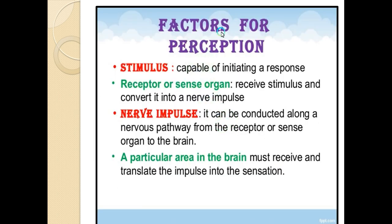For perception to occur, four factors are required. First is a stimulus — something capable of initiating a response. Second is a receptor or sense organ, which must receive the stimulus and convert it into nerve impulses. We have different sense organs like the eye, ear, tongue, and skin.